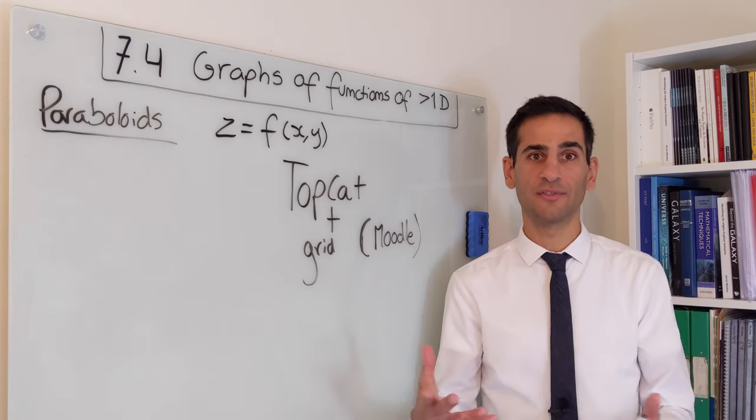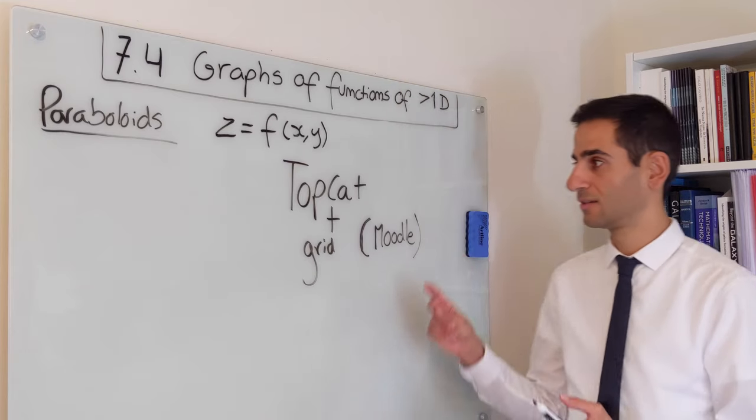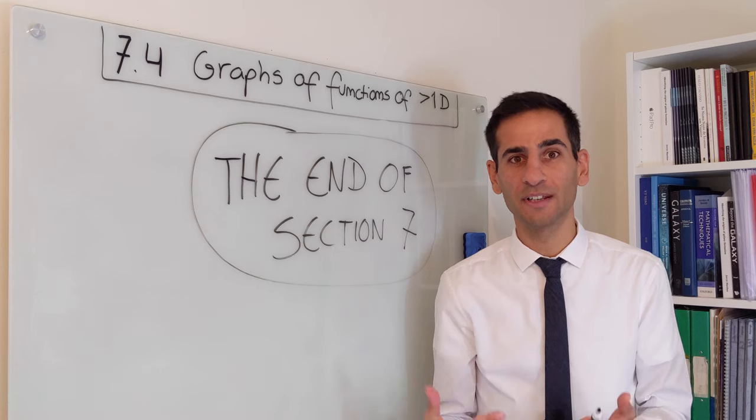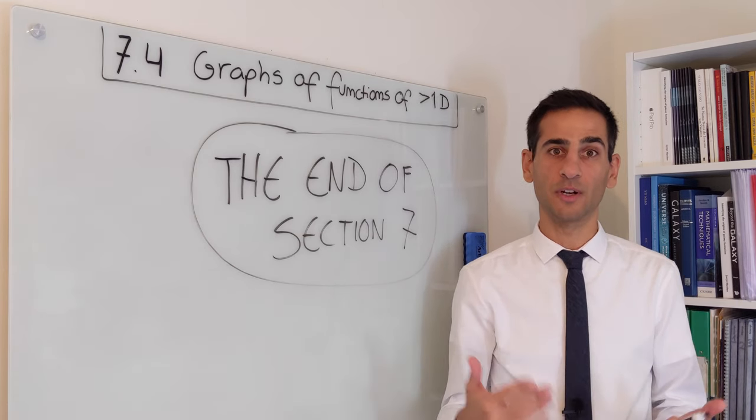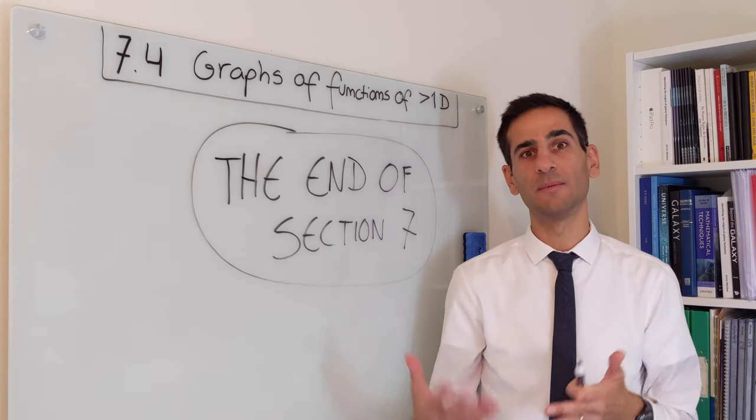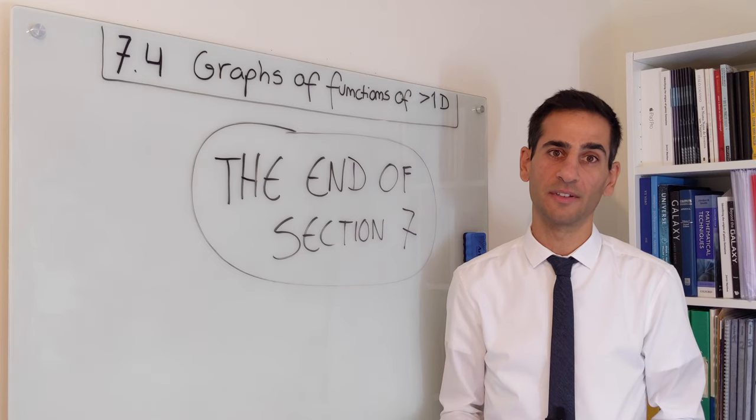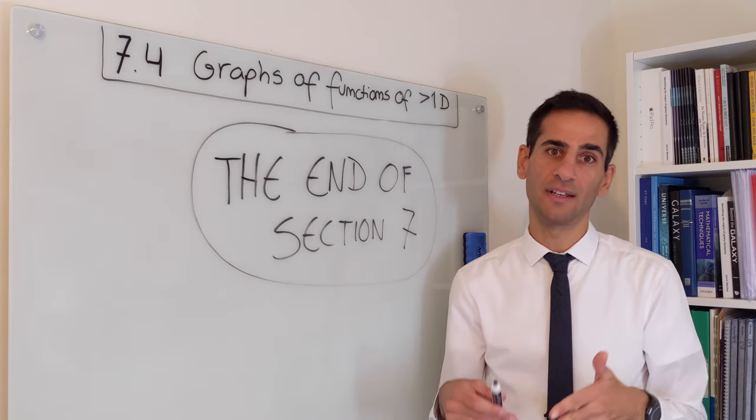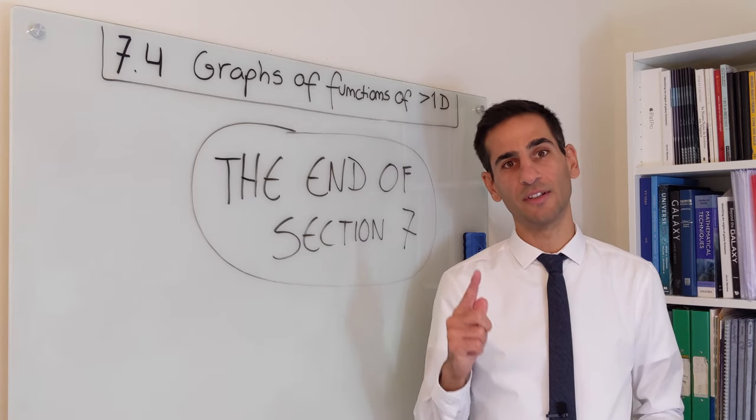We have therefore reached the end of section seven. This was obviously a very quick one but important to build the framework to deal with functions of more than one dimension - how you can visualize them, what they mean. This will be really important for you to then interpret partial derivatives and on our way to defining and using directional derivatives.